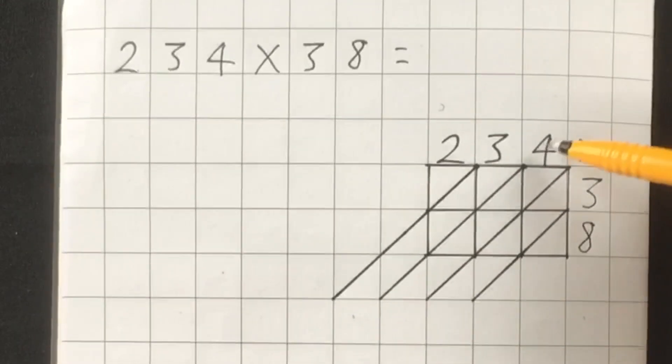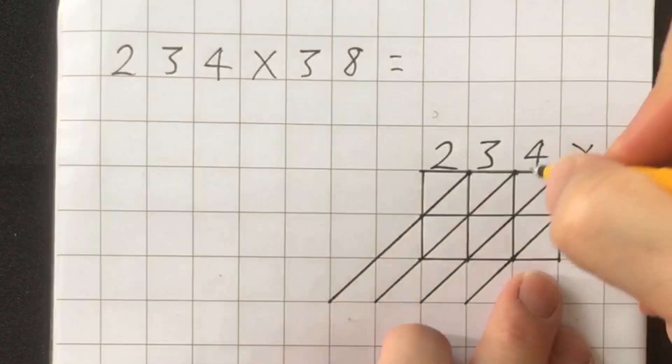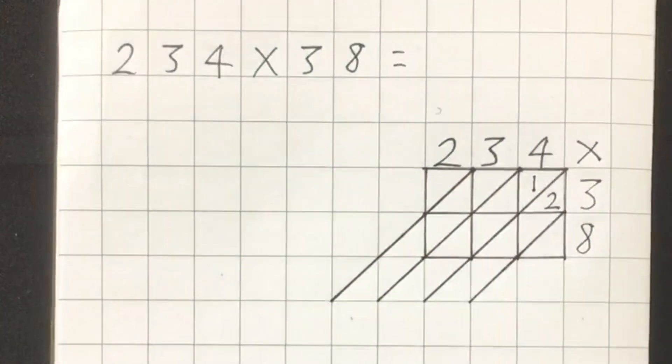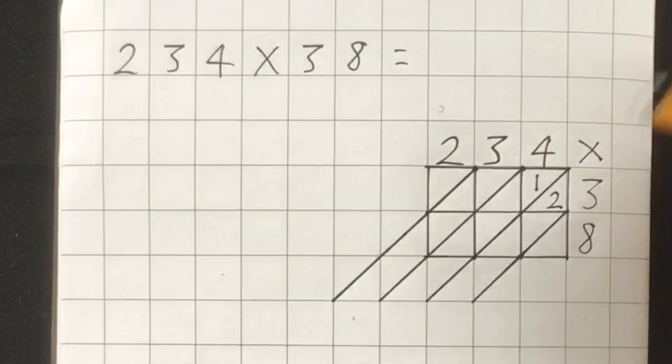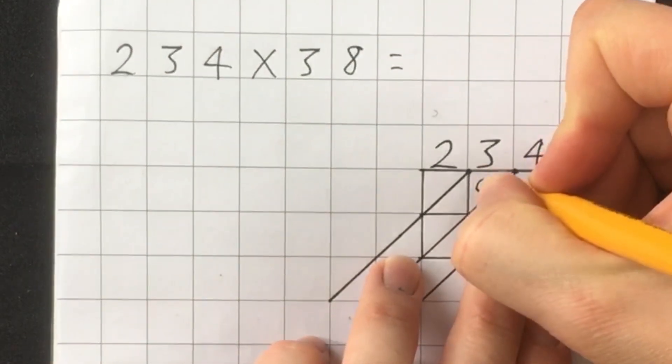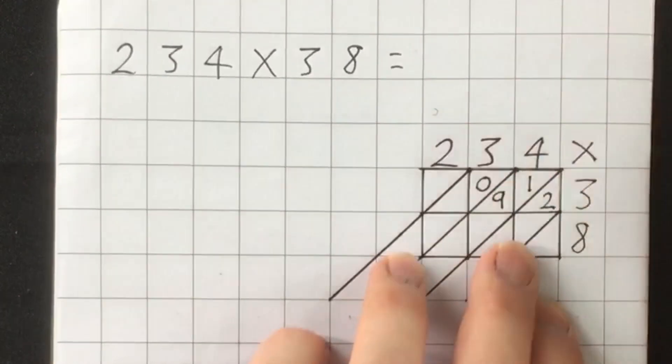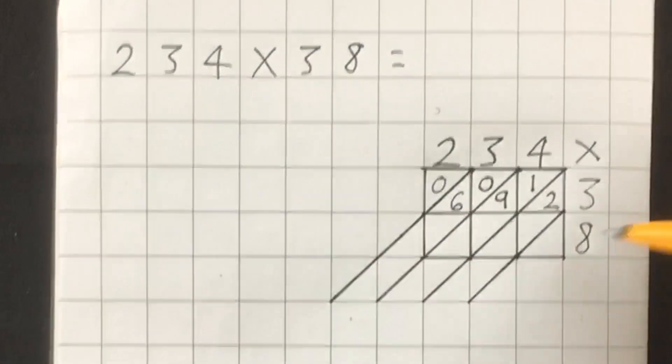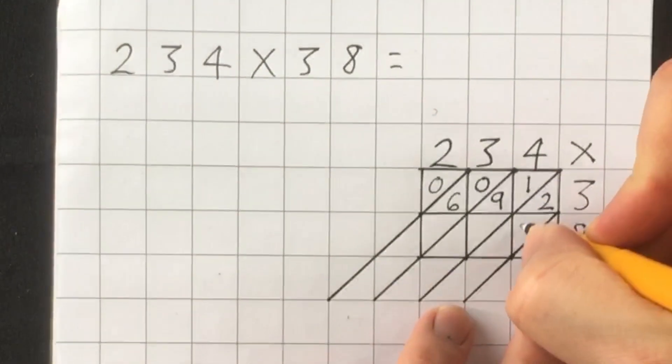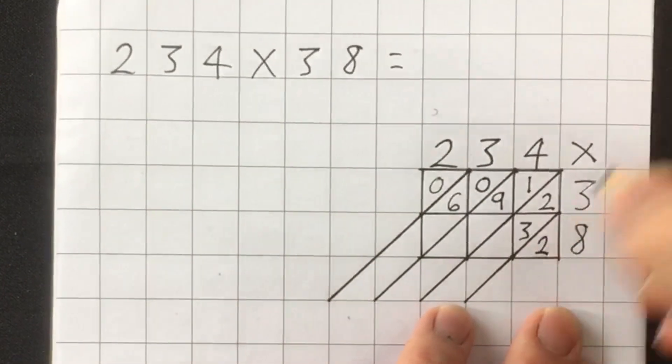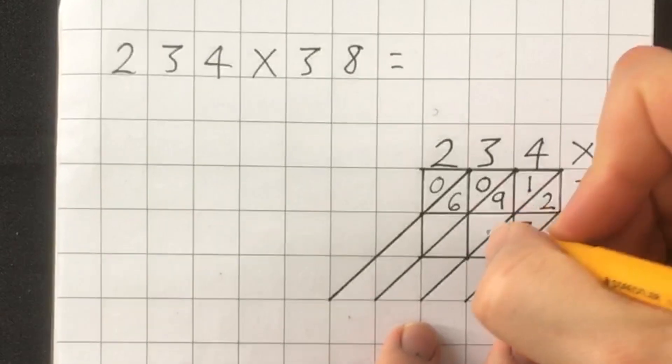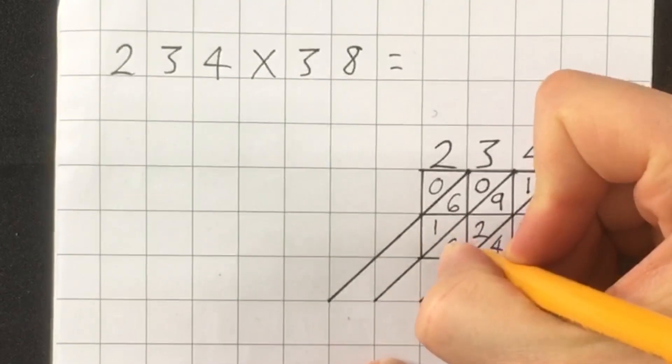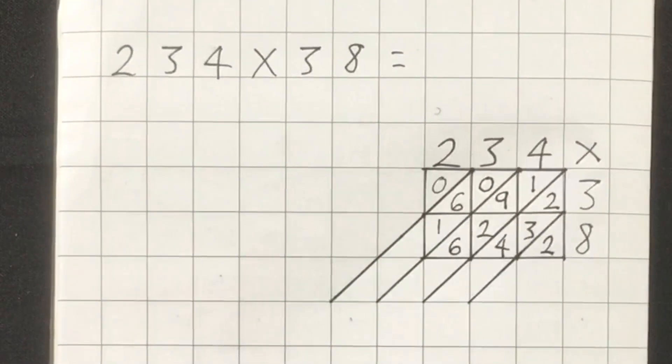Now all I have to do is use my times tables knowledge to fill in the boxes. So in this box I'm going to write the answer to four times three, which is twelve. So I put the tens in the top section and the ones in the bottom section. Now I do three times three, which is nine. So that has zero tens. So I still must put the zero there and then nine in the bottom section. Two times three is six, zero six. Now the next row, four times eight is thirty-two. Three times eight is twenty-four. Two times eight is sixteen.